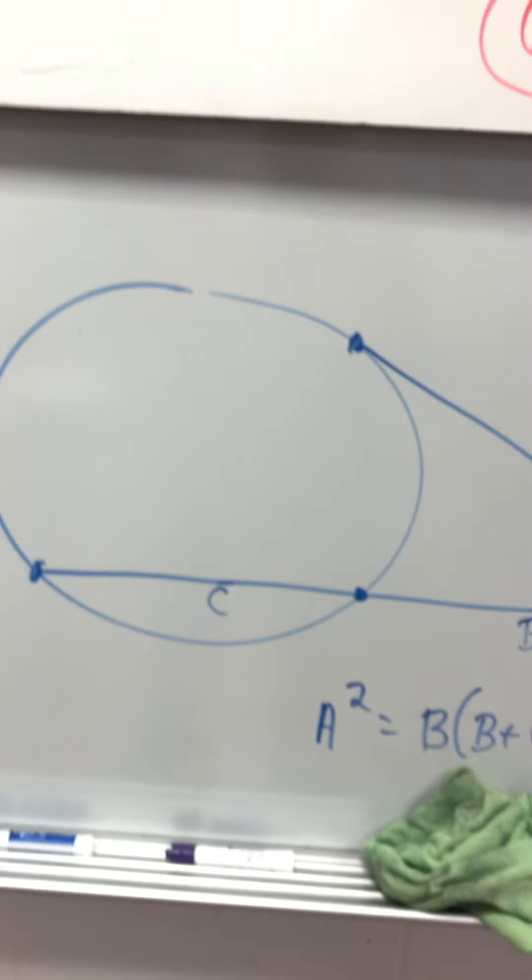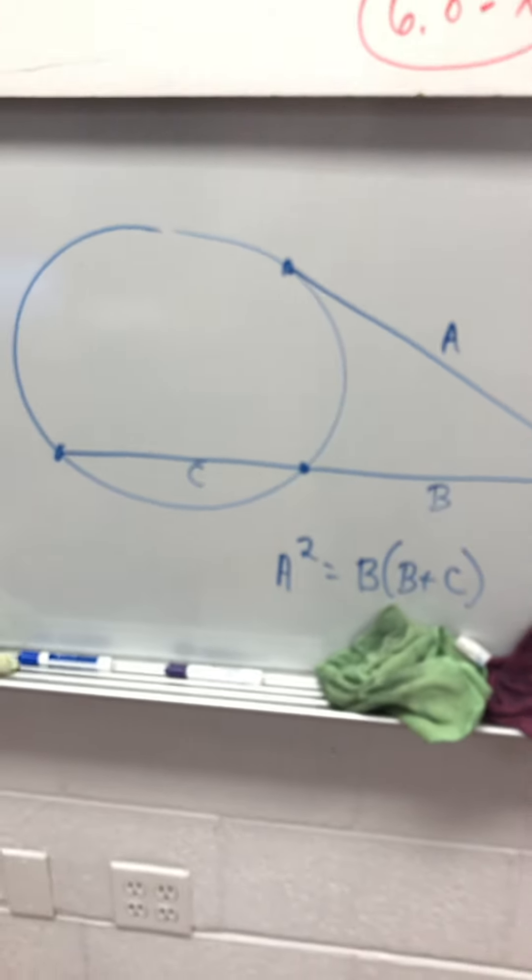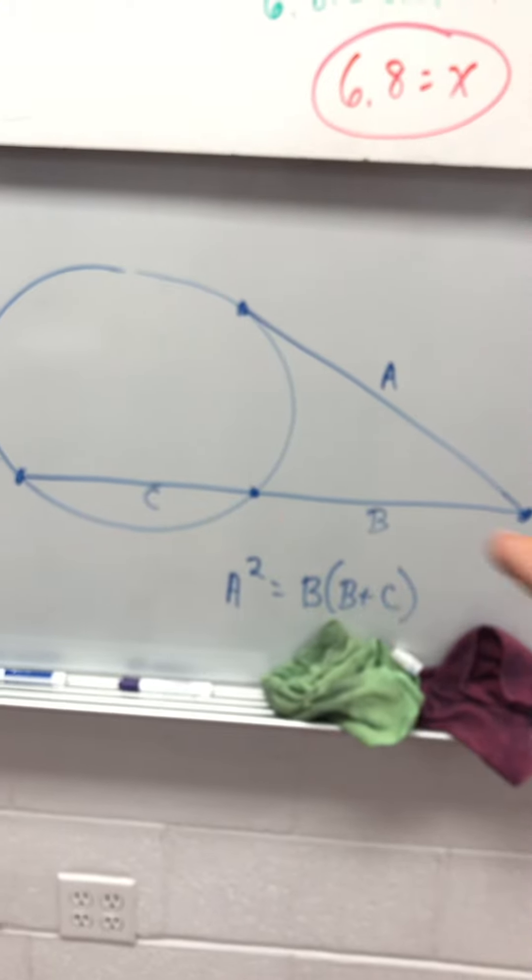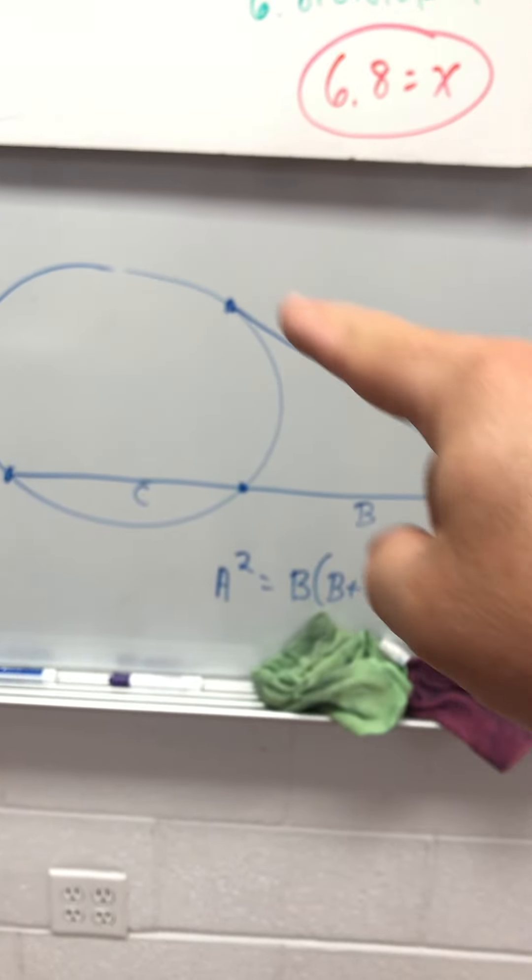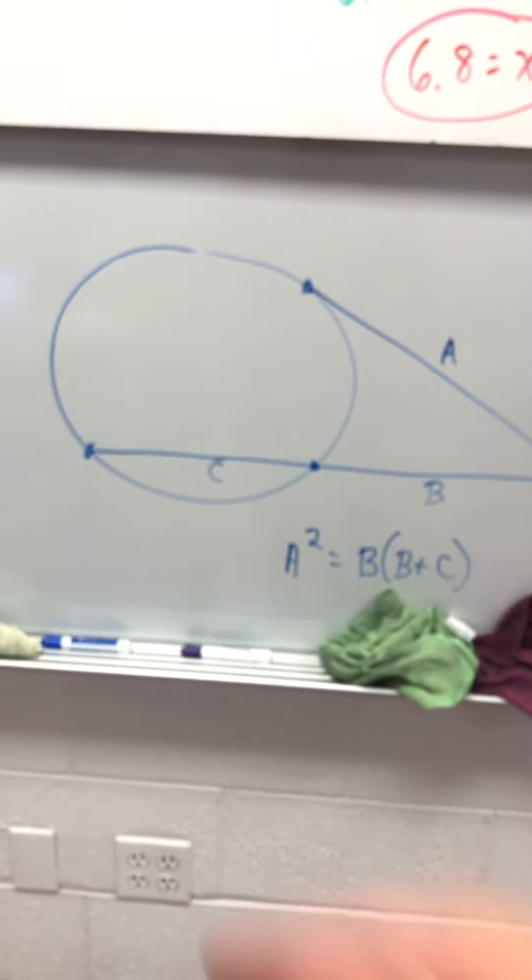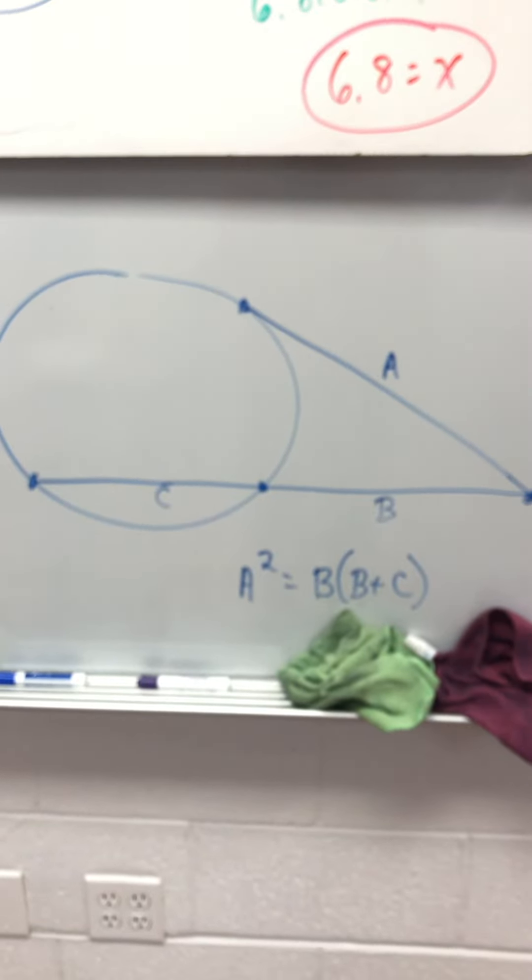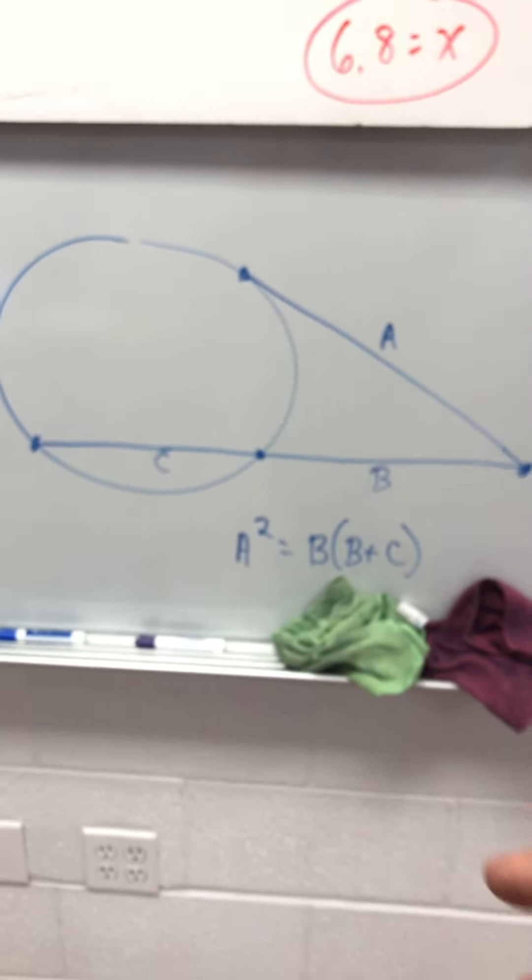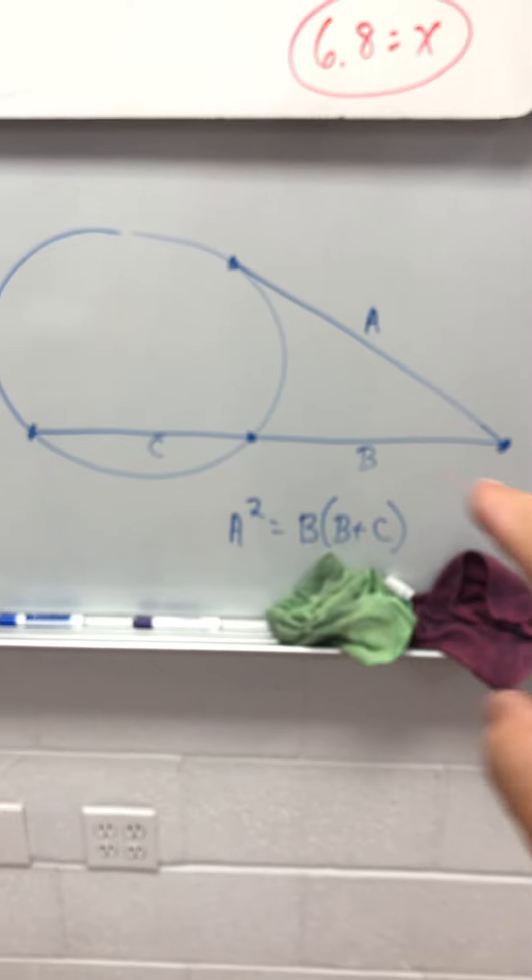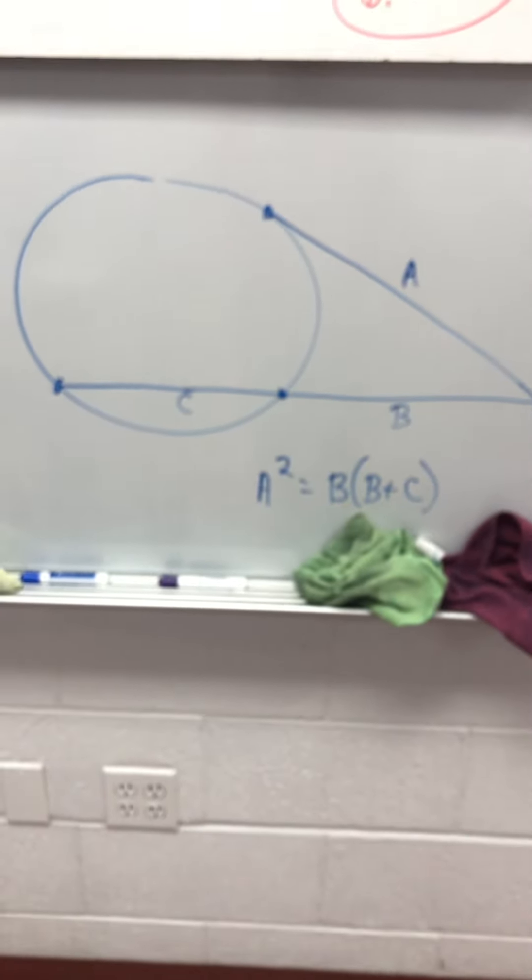Now, over here, notice one is a tangent and the other is a secant. This one just touches the circle, this one goes through the circle. In this case, a squared equals b times b plus c.